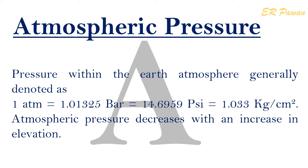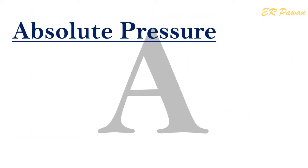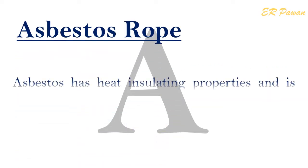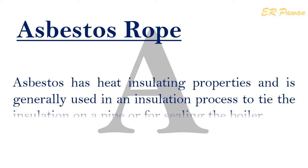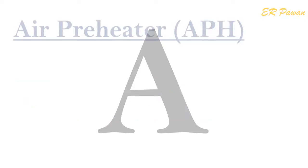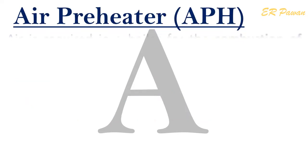Absolute Pressure: It is the sum of pressure measured by a pressure gauge and atmospheric pressure, so it is referenced from an absolute vacuum. Asbestos Rope: Asbestos has heat insulating properties and is generally used in the insulation process to tie the insulation on a pipe or for sealing the boiler.